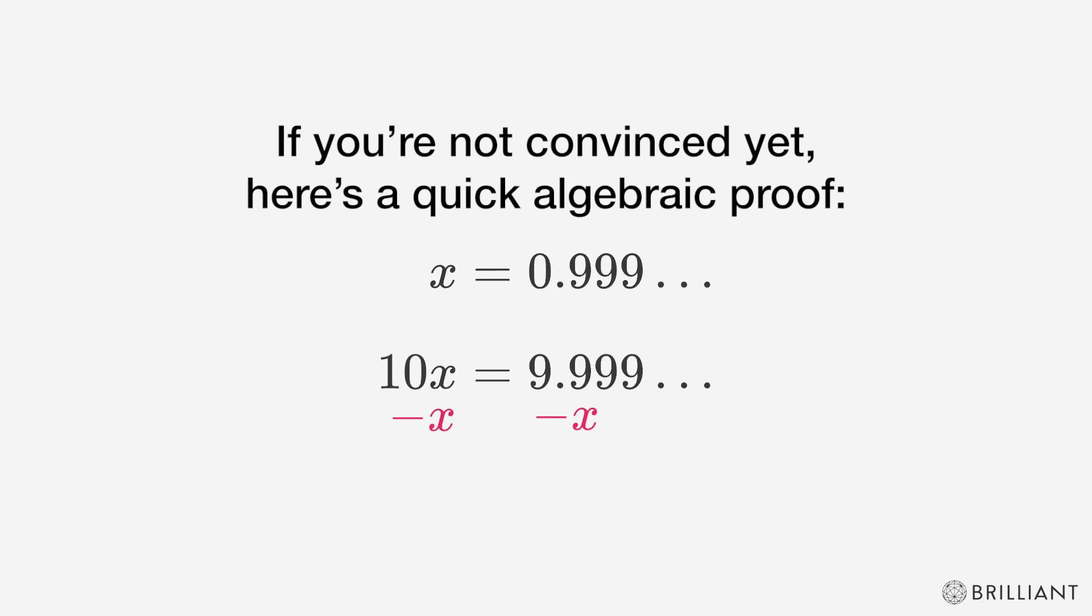If you subtract x from both sides, you'll get 9x equals 9. So divide both sides by 9 and you'll get x equals 1, which means that x equals both 0.999 repeating and 1.